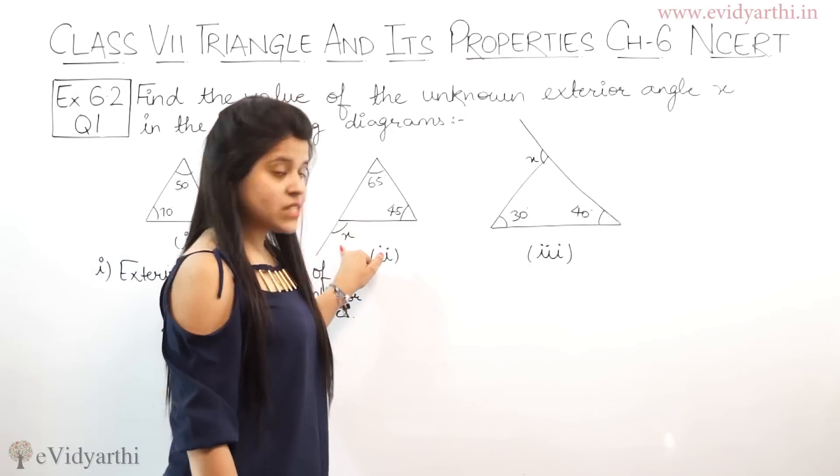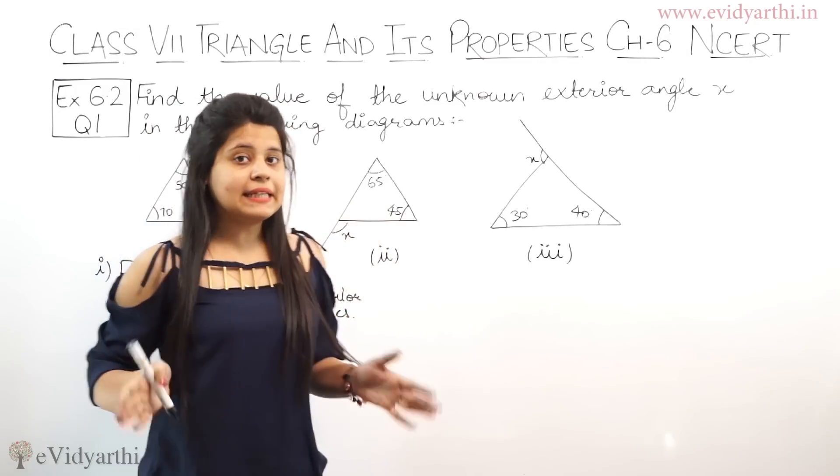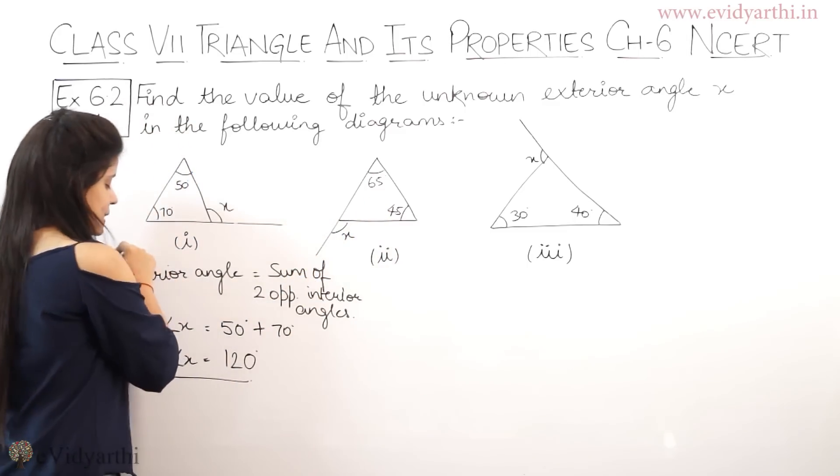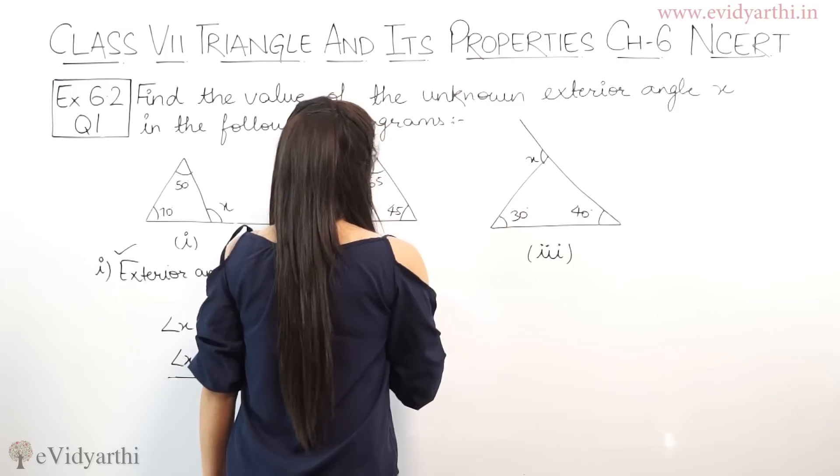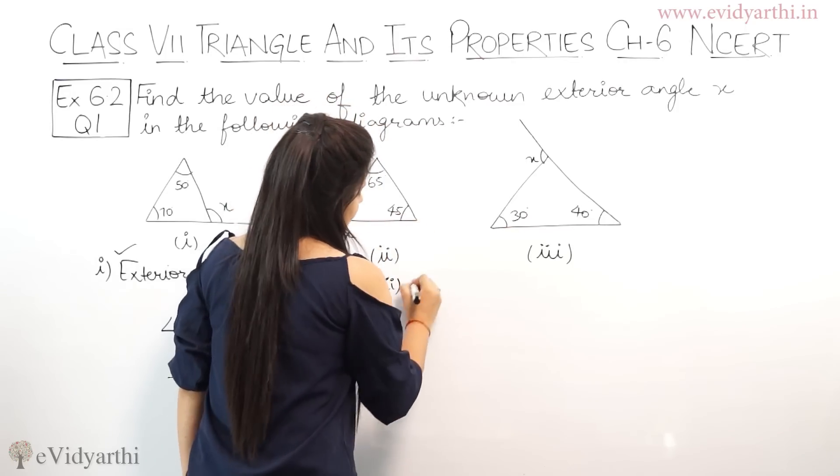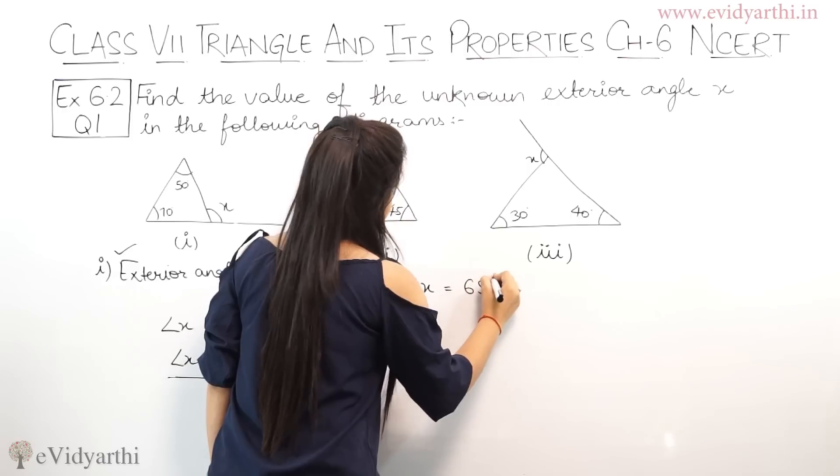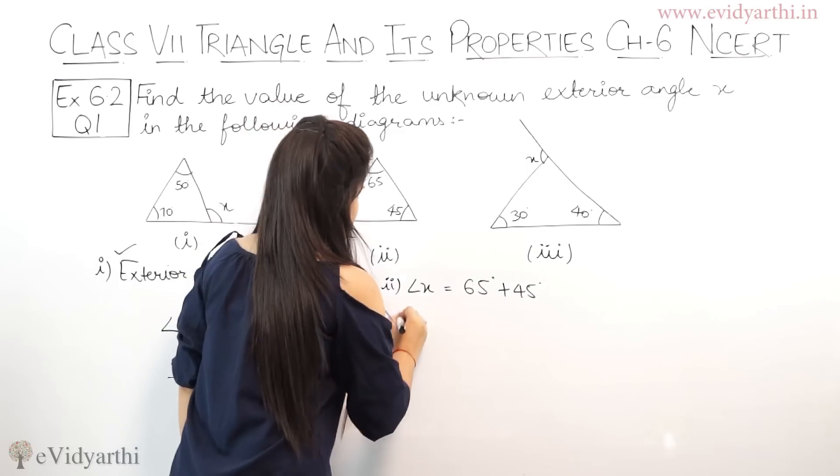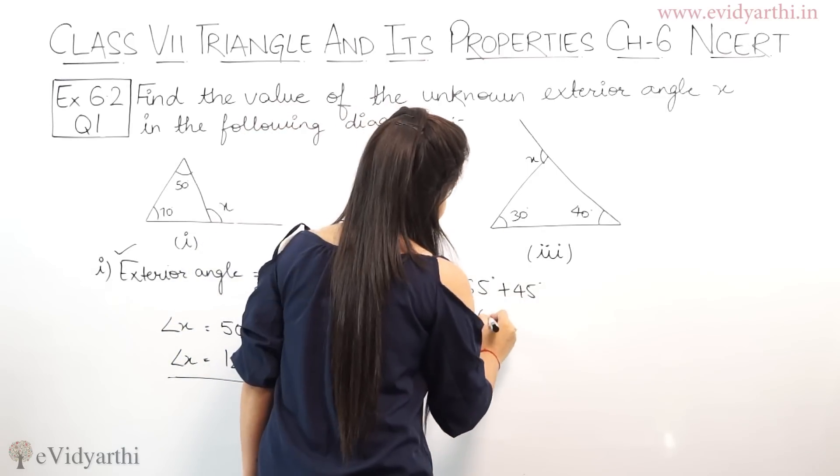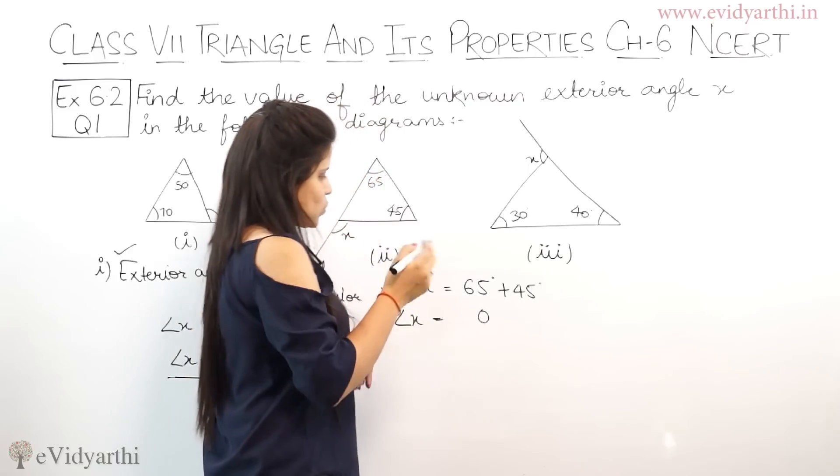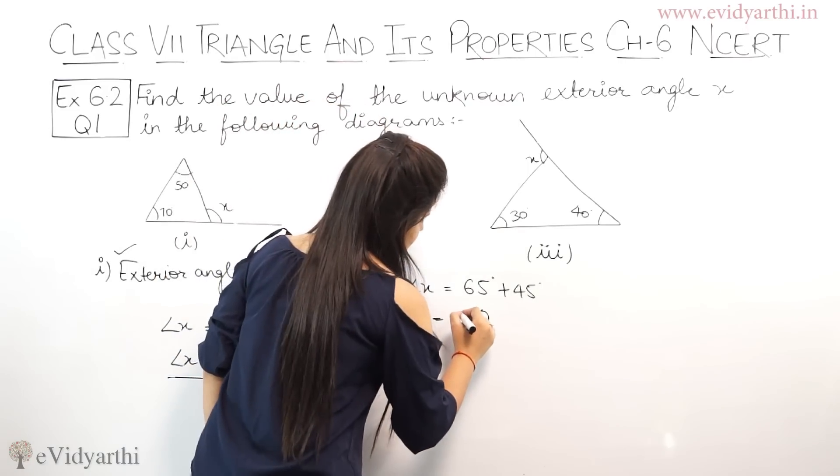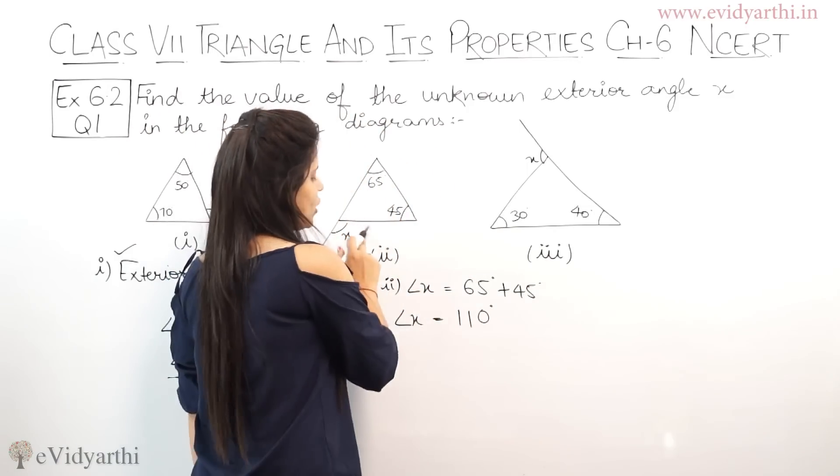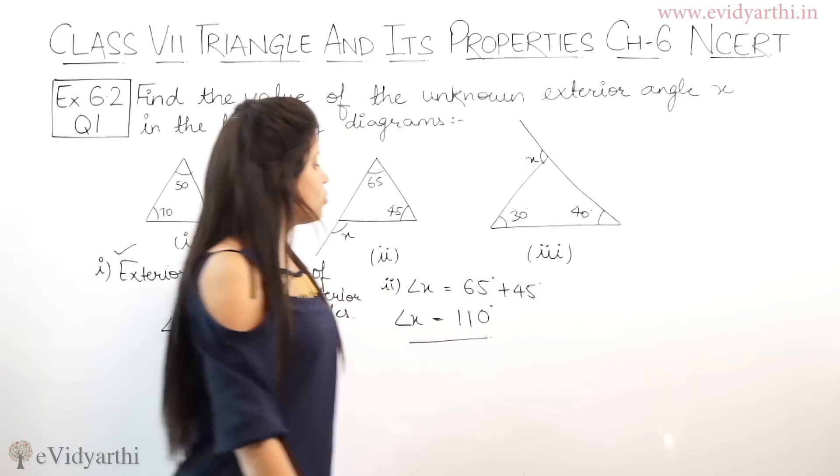Next part. Again, you have X. You have two opposite interior angles given here, that is 65 and 45. Again the same property. In the second part, angle X equals to 65 degree plus 45 degree. We add. 5 plus 5 is 10, and 6 plus 1 is 7, plus 4 is 11. This is 110 degree. Here you have X value, 110 degree. Third part.